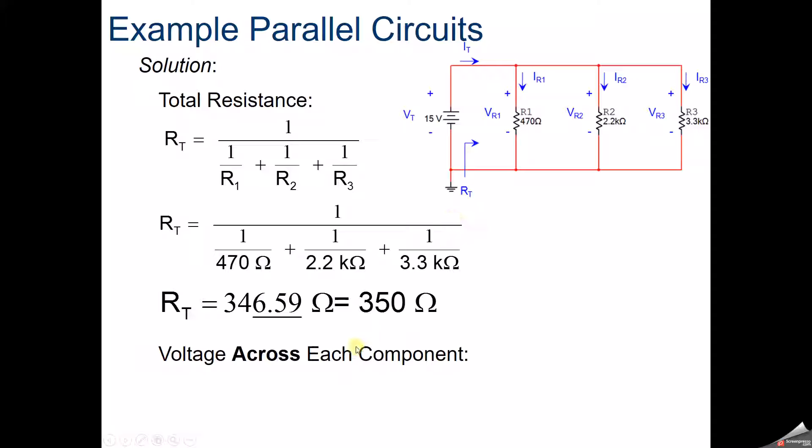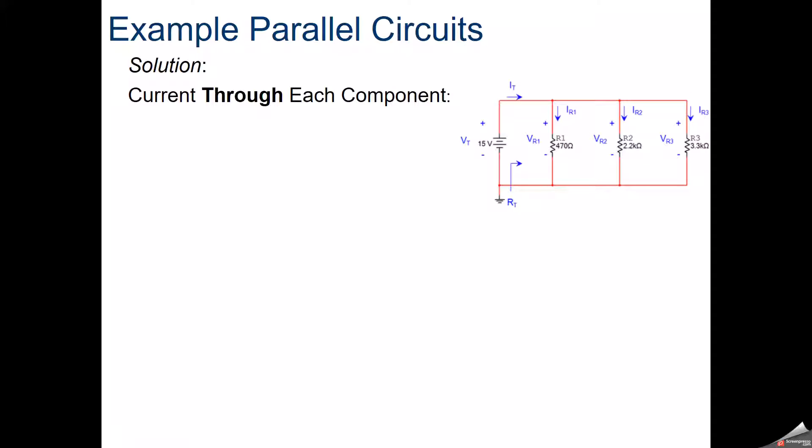So next, we want to calculate the voltage across each component. Well, it's a parallel circuit, so the voltage at each component is the same, 15 volts. So at this resistor 1, if we know the voltage and we know the resistance, what can we calculate? We can calculate that current.